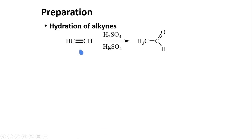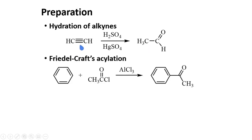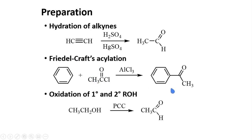Several preparations of aldehydes and ketones have already been discussed in our previous topics, so I'll just enumerate some of them. The first is the hydration of alkynes — using the appropriate reagent combination, you will produce an aldehyde or a ketone depending on the position of the triple bond. Friedel-Crafts acylation will give you aromatic ketones. Oxidation of primary and secondary alcohols can also give you aldehydes and ketones. And lastly, ozonolysis of alkenes will also give you aldehydes and ketones depending on the substitution of the double bond.